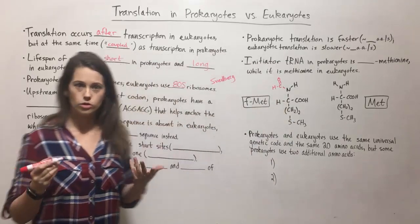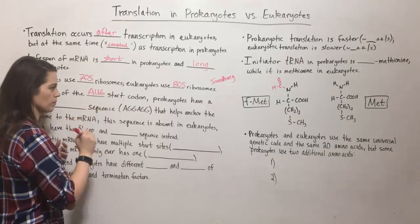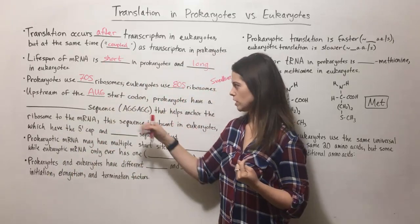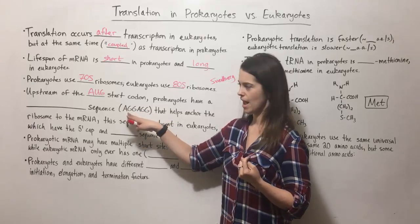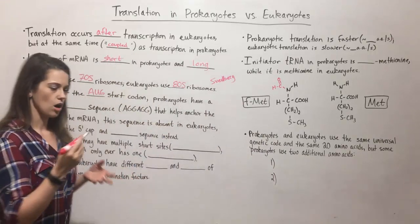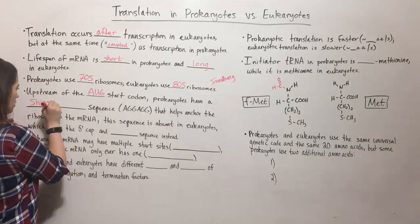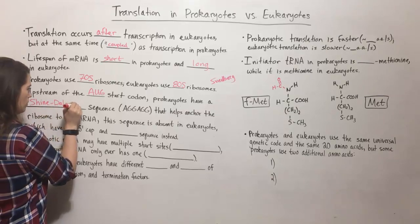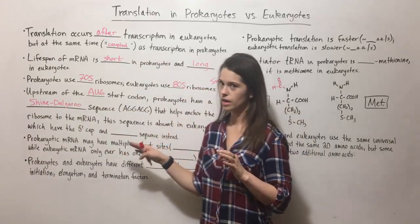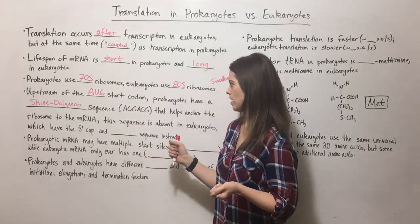Prokaryotes and eukaryotes do use the same start codon AUG. But upstream of that start codon, prokaryotes have a special sequence — it's AGG, where A is adenine and G is guanine. This sequence is called the Shine-Dalgarno sequence, named for a couple of scientists. The Shine-Dalgarno sequence helps to anchor the 70S ribosome to the mRNA in prokaryotes.